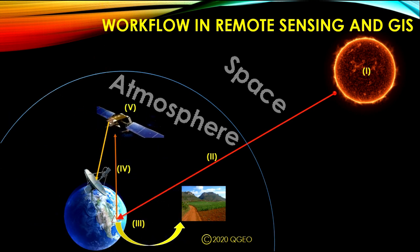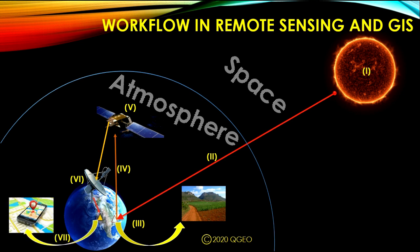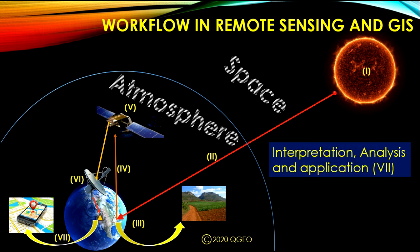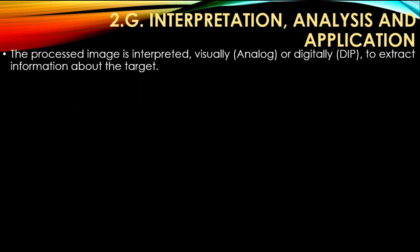Interpretation, analysis and application in the workflow of remote sensing and GIS: the processed image is interpreted visually (analog) or digitally through digital image processing (DIP) methods to extract information about the target. The most important elements of visual image interpretation are size, shape, shadow, tone or color, texture, pattern, parallax, site, and association.